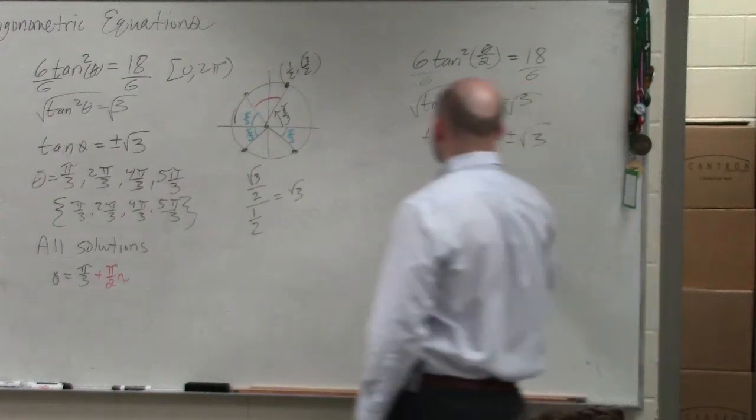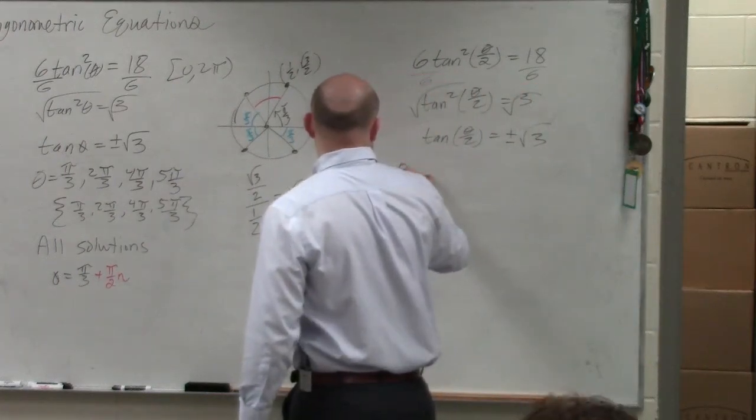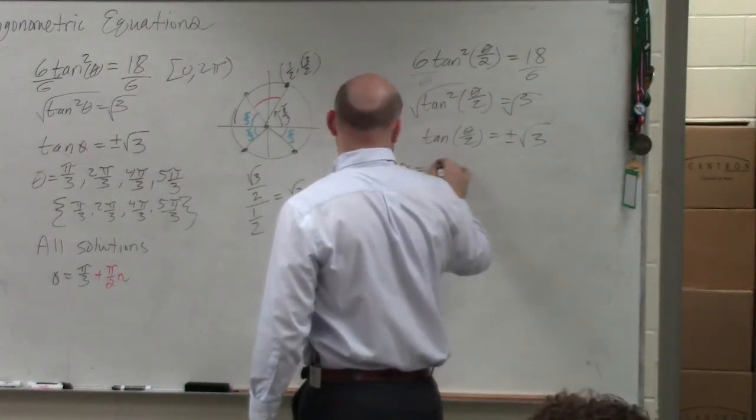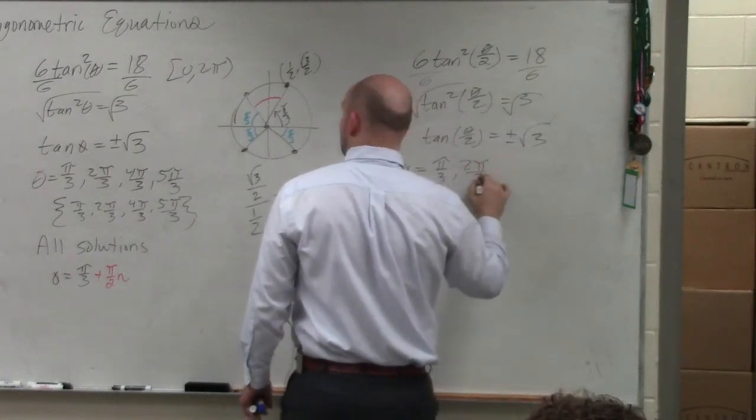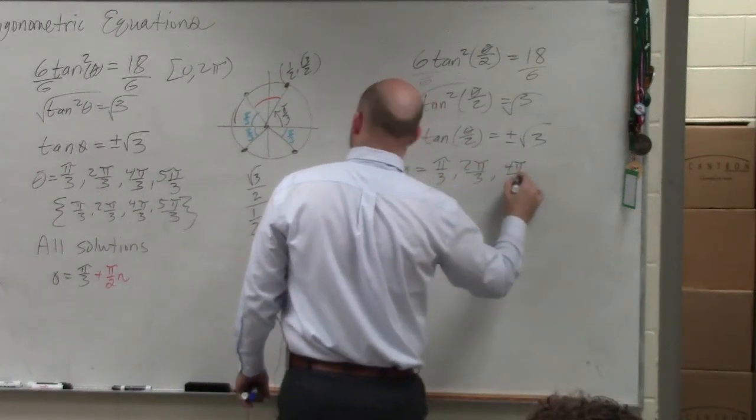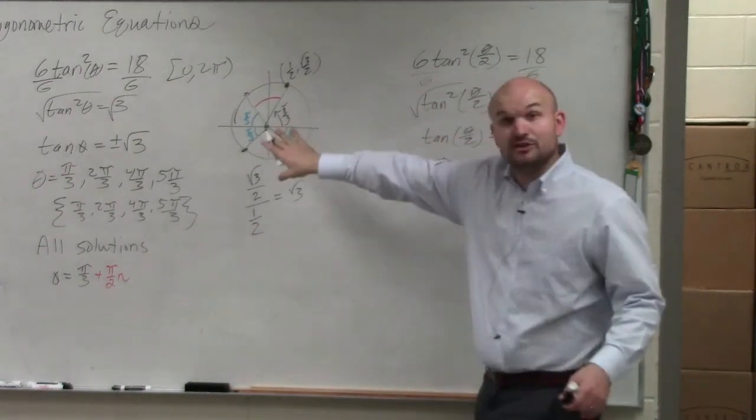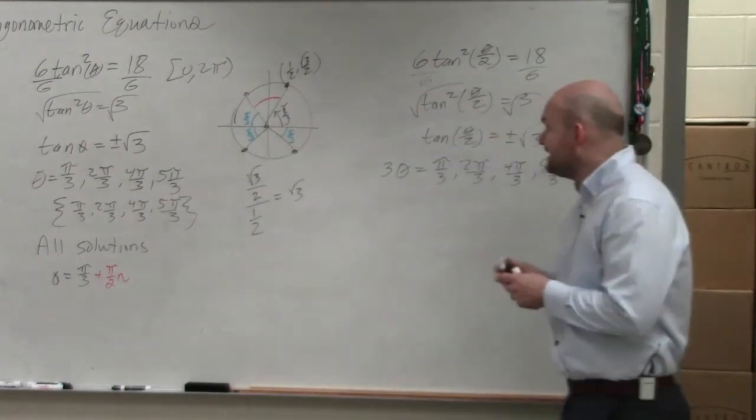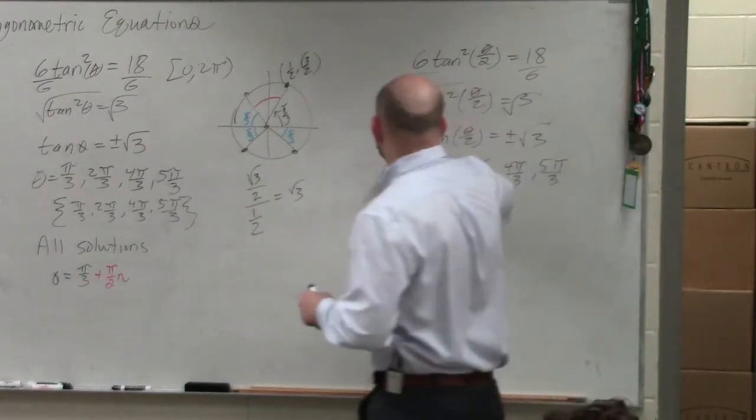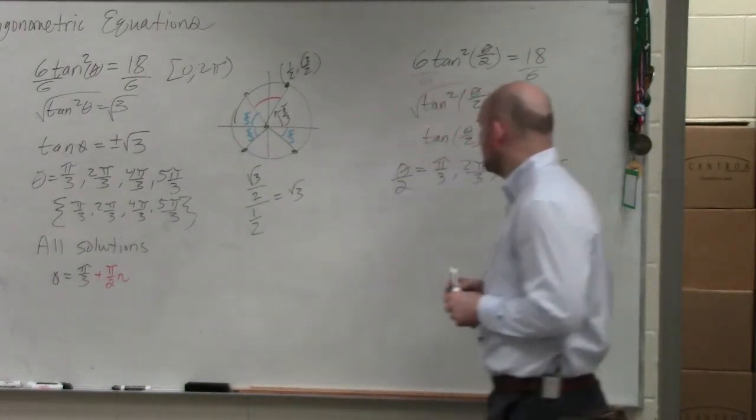We said that our solution set is pi over 3, 2 pi over 3, 4 pi over 3, and 5 pi over 3. And that was based on the unit circle that we used. And now, I'm sorry, that was pi over 2. I was doing the other problem.